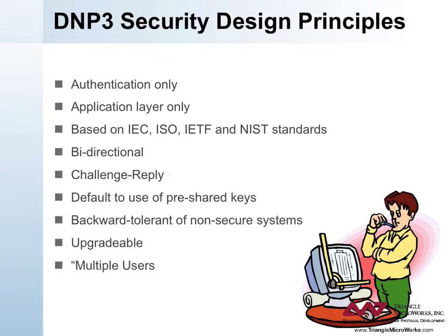Bidirectional: either the master or the outstation can authenticate messages. Challenge-Reply: it is based on the common security concept of challenge and response. The device performing the authentication challenges the sender by providing data that must be included in the authentication calculation. This makes spoofing much more difficult. It also means the receiving device determines which messages must be authenticated. Pre-Shared Keys: DNP3 Secure Authentication Version 2 assumes the sender and receiver have previously shared a cryptographic key through some method other than DNP3. DNP3 Secure Authentication Version 5 provides a method to permit these pre-shared keys to be changed remotely and securely. Backwards Tolerance: the specification attempts to make it possible for a non-secure device to identify that a secure device is using a portion of the protocol it does not recognize, without an authentication message causing the non-secure device to fail.